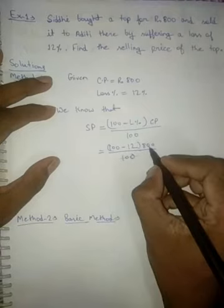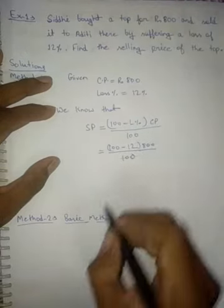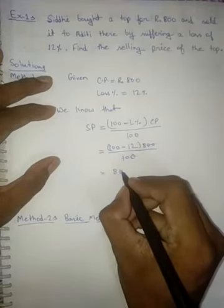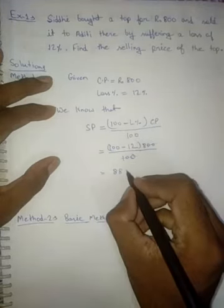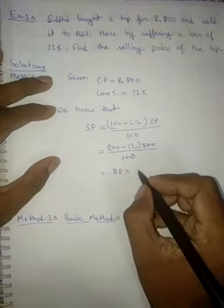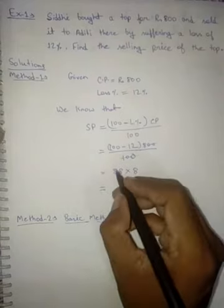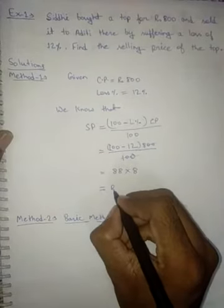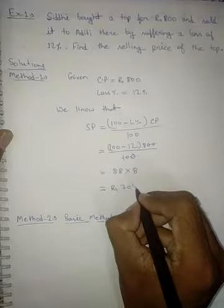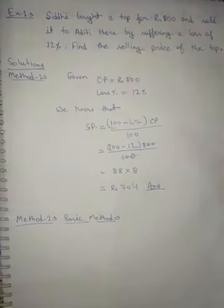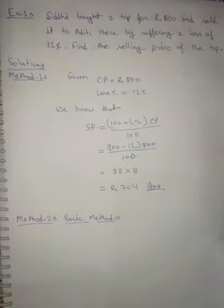Putting the values: (100 minus 12) into 800 divided by 100. The 100s cancel out, giving 88 into 8, which equals Rs. 704. That is your selling price — that is your answer for Method 1.